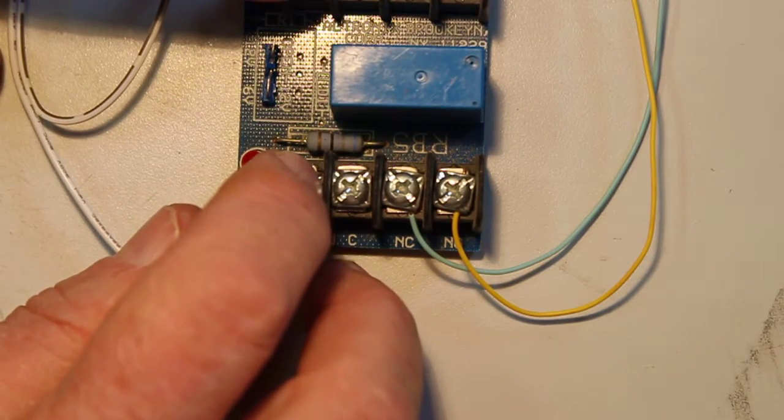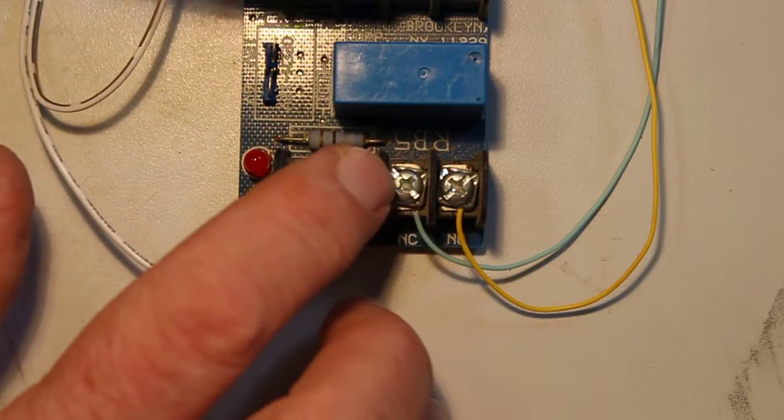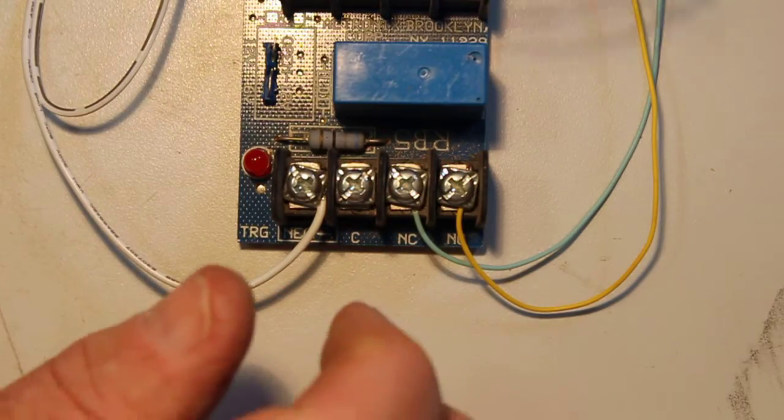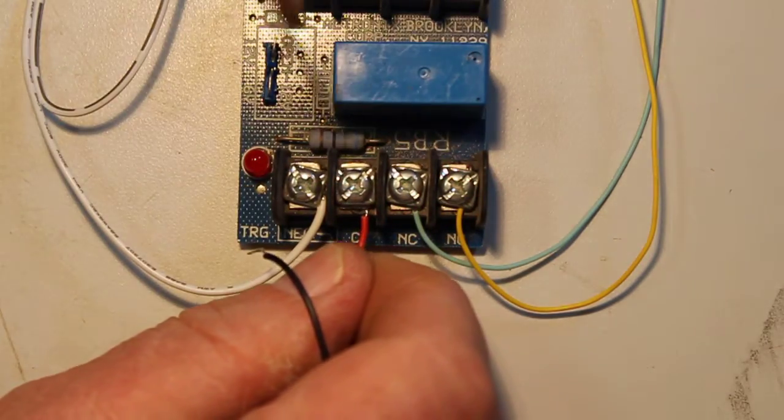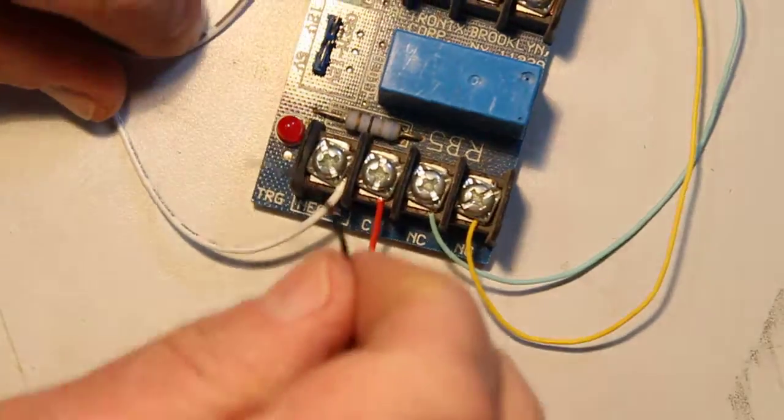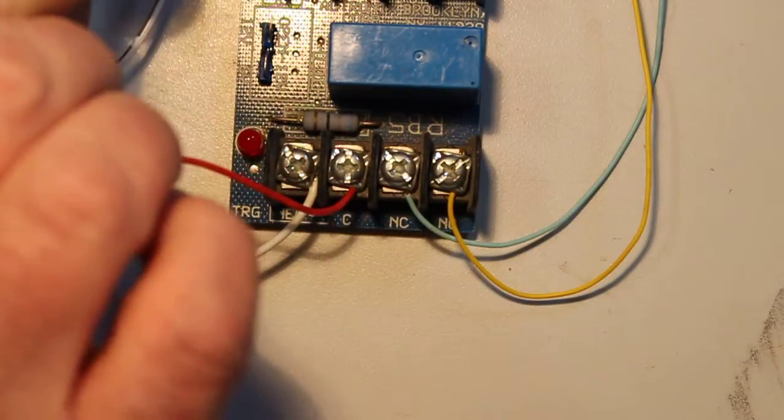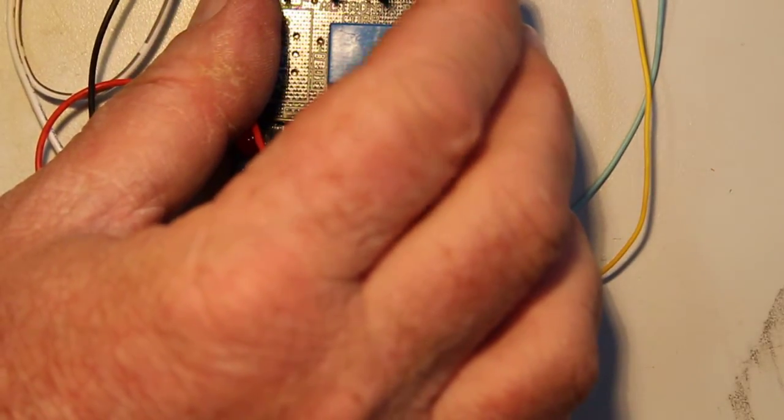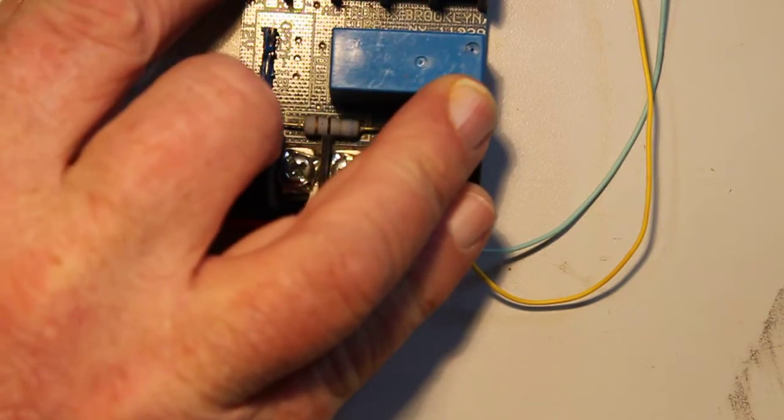This goes into the negative. So again, the positive and negative input of the board is the trip from the alarm panel. Now on the common, I'm going to use a battery clip here and a nine volt battery. Again, the polarity does not matter on your commons because it's just going to flip. Put this over here on the common side.